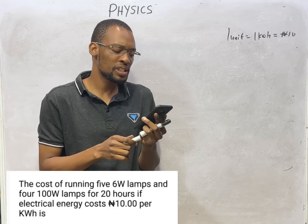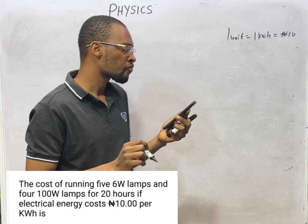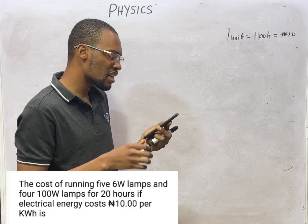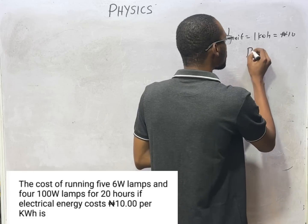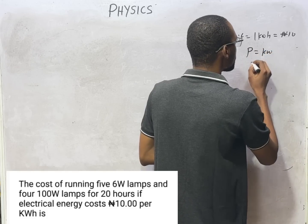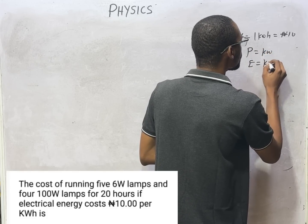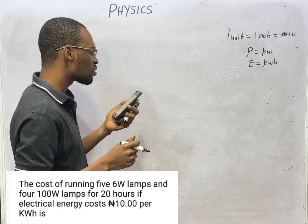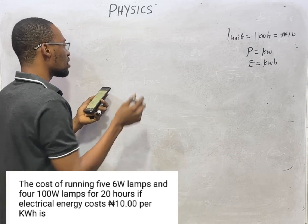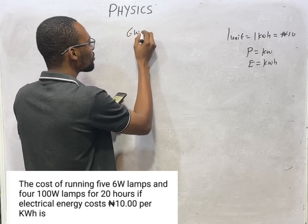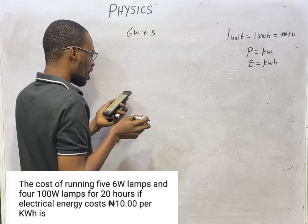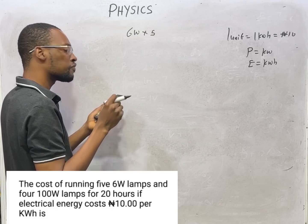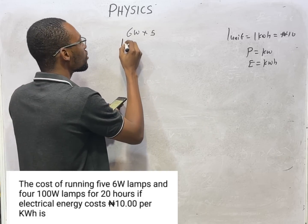For commercial or business purposes, the power must be in kilowatts and energy must be in kilowatt hours. This person is running 5 60-watt lamps, so we have 6 watts times 5. And we have 400-watt lamps — we have 4 of those. The question has a correction: the real question is 60-watt lamps.